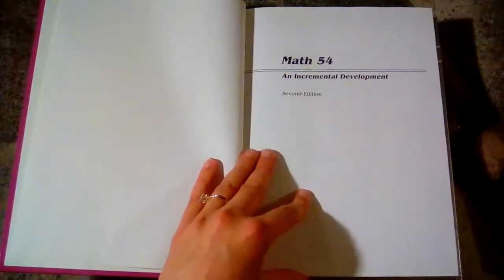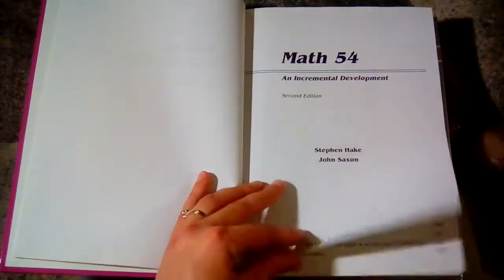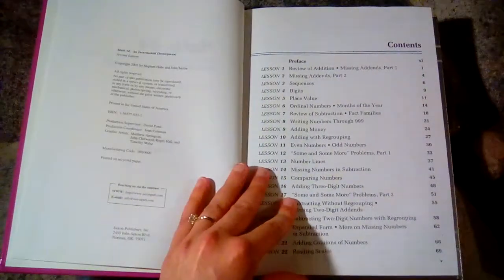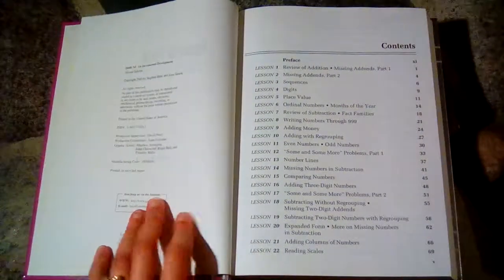I think they're on the fourth edition right now but they're paperback now so they're not as sturdy. Some people like to get the older ones because they'll last longer and the older ones are so much cheaper too. This will only cost about ten dollars.